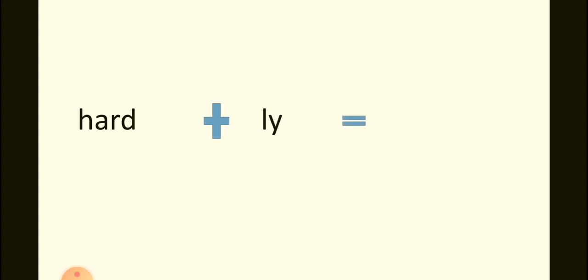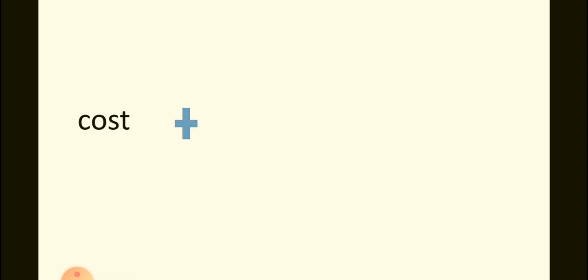Now the '-ly' sound. Hard plus -y — hardly. Cost plus -y — costly. Children, today you learned prefix and suffix. Go through this video again and read and write in your activity book. Thank you.